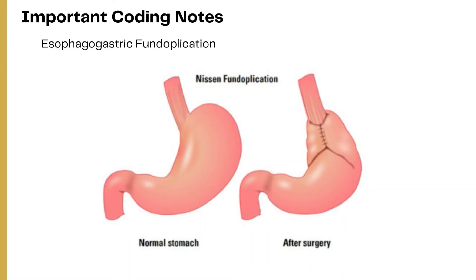As an example, in the esophagogastric fundoplication procedure, the gastric fundus of the stomach is wrapped around the lower end of the esophagus, which reinforces the esophageal sphincter's closing function. The amount of food that passes from the esophagus to the stomach is restricted. This surgery strengthens the valve between the esophagus and stomach and is used to treat gastric reflux disease. Nissen fundoplication is a classic example of Restriction, since the lumen is only partially closed.